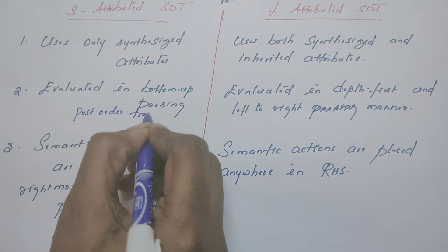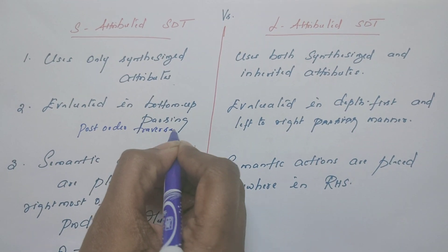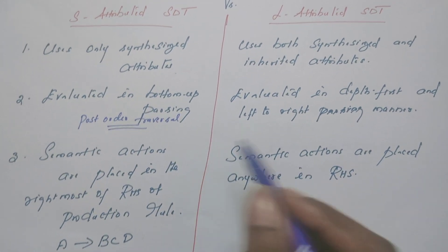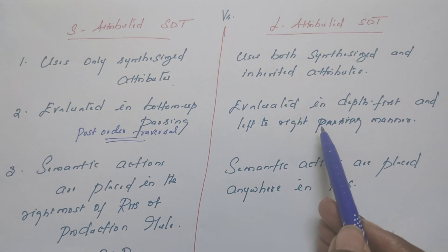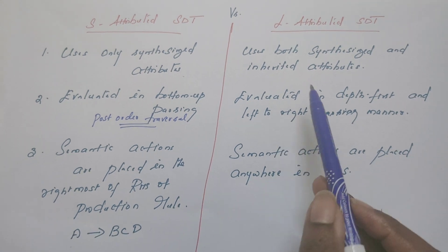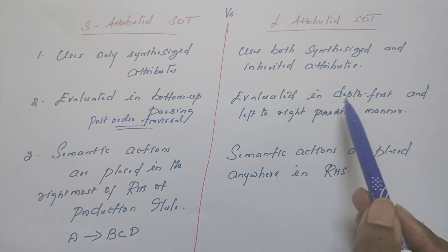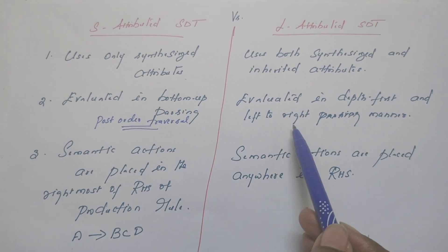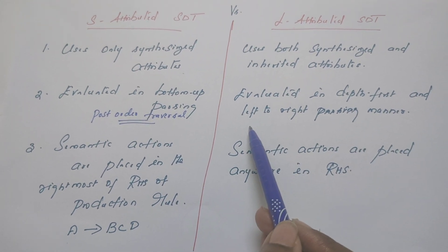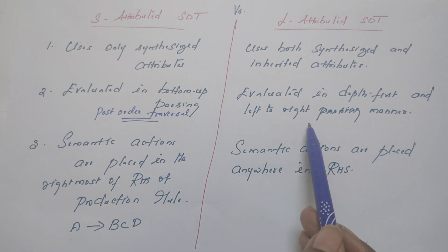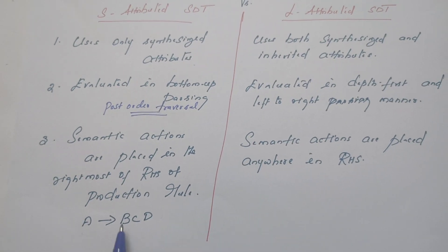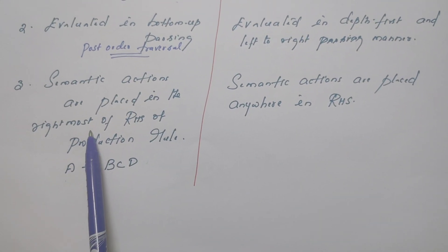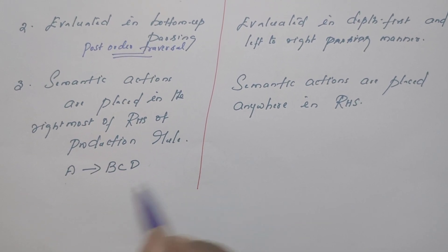Post-order traversal means left, right, and then the root. Whereas L-attributed SDT can be evaluated in depth-first order — starting from left and then moving towards the right. In S-attributed, semantic actions are placed at the rightmost position of the right-hand side of the production rule.